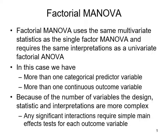We also have categorical predictors, which is why we're using MANOVA instead of, for example, multiple regression. And again we have more than one of those categorical predictors. Because of the number of variables the design, statistics, and interpretations are more complex, but this complexity is just layered — it's nothing more than what we've done before, just combined into a single test. Any significant interactions will require simple main effect tests for each outcome variable.